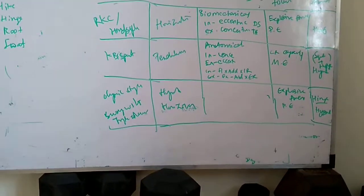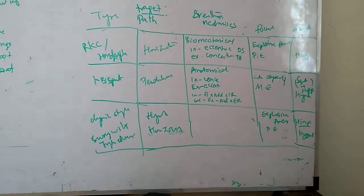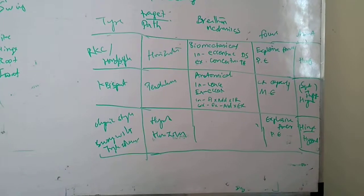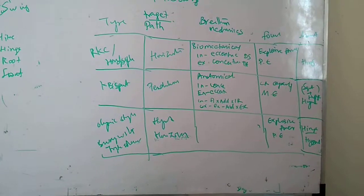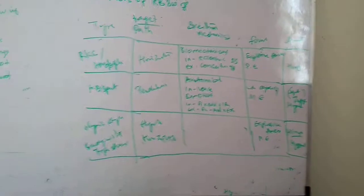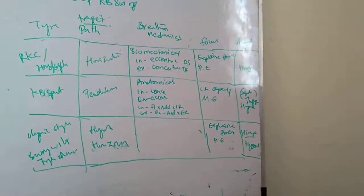Finally, the Olympic style, that is swing with triple extension. The bell path can be chosen from either pendulum style or horizontal. It can be hybrid. The breathing mechanics is the same as the hardstyle swing, that is biomechanical. The focus here is explosive power and power endurance.